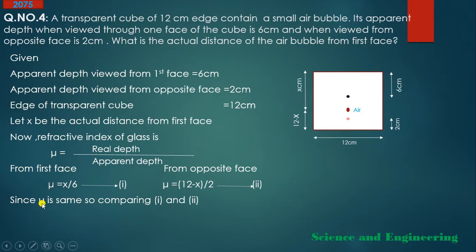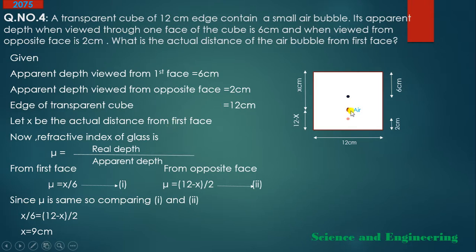Since μ is a fixed value for a particular medium (glass), we can equate Equation 1 and Equation 2. Equating: x/6 = (12 − x)/2. Solving, we get x = 9 cm. So the actual position of the air bubble is 9 cm from the first face, and 12 − 9 = 3 cm from the opposite face.